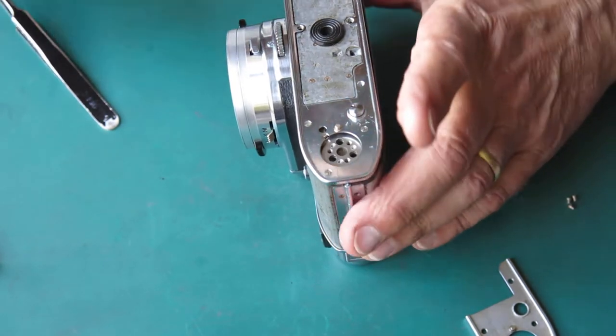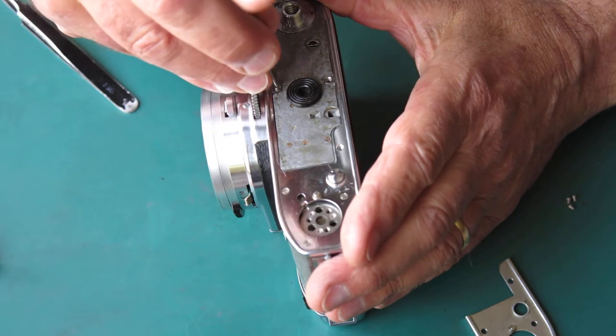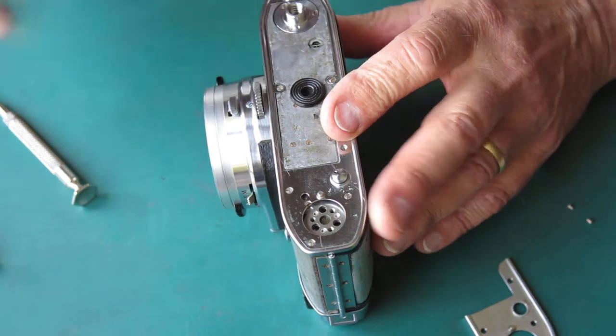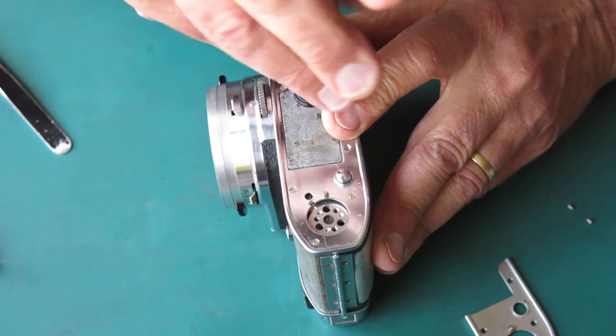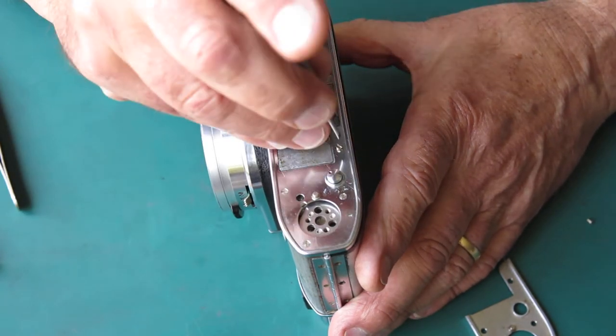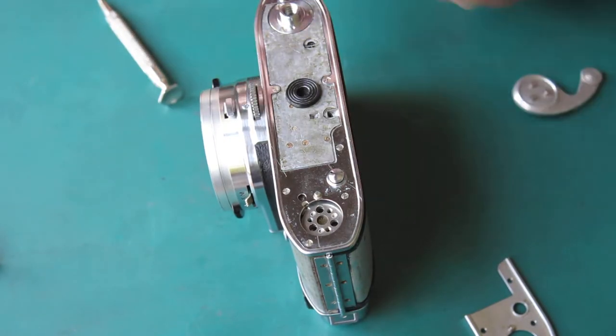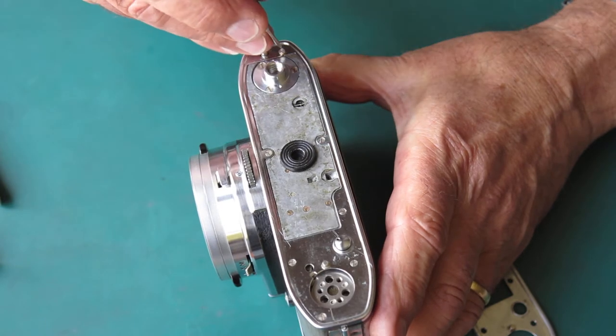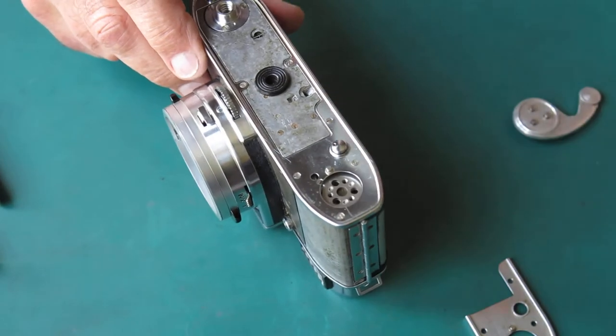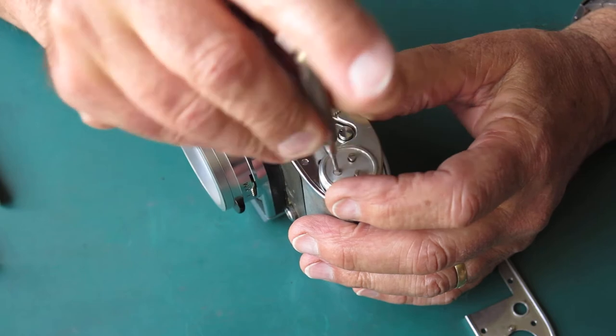That's because I might want access here to adjust the position of the mirror, should it be that the image in the finder does not correspond with the image at the film plane. Then I might need to adjust the rest position of the reflex mirror, and that's done at this point. So that means the leatherette has to go on the base of the camera pretty much last of all.